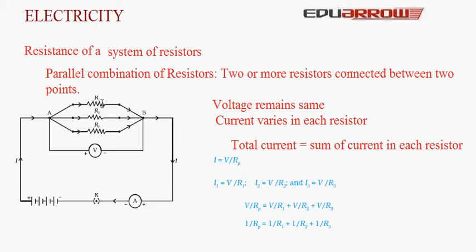The current flowing in each resistor — R1, R2, and R3 — will be different. The total current in the circuit is equal to the sum of the current in each resistor: I = I1 + I2 + I3. The total current is total voltage upon total resistance, that is V upon Rp.